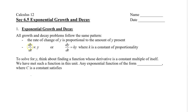So here we have dy/dt is proportional to y — this symbol here is a proportional symbol. Or we can say that dy/dt is equal to k times y, where k is called the constant of proportionality.